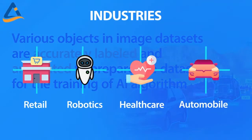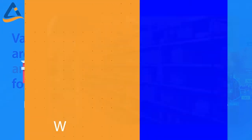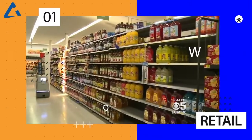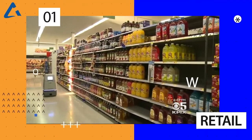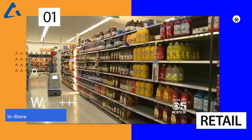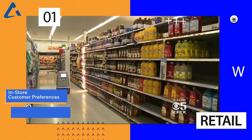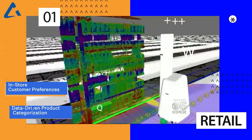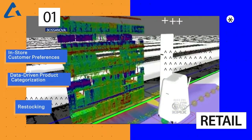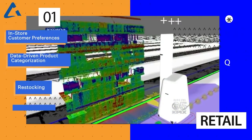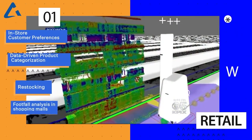Let's look at some industries in which image annotations are widely used. Retail companies are increasingly adopting AI-based solutions to understand in-store customer preferences, footfall analysis in shopping malls, and data-driven product categorization.